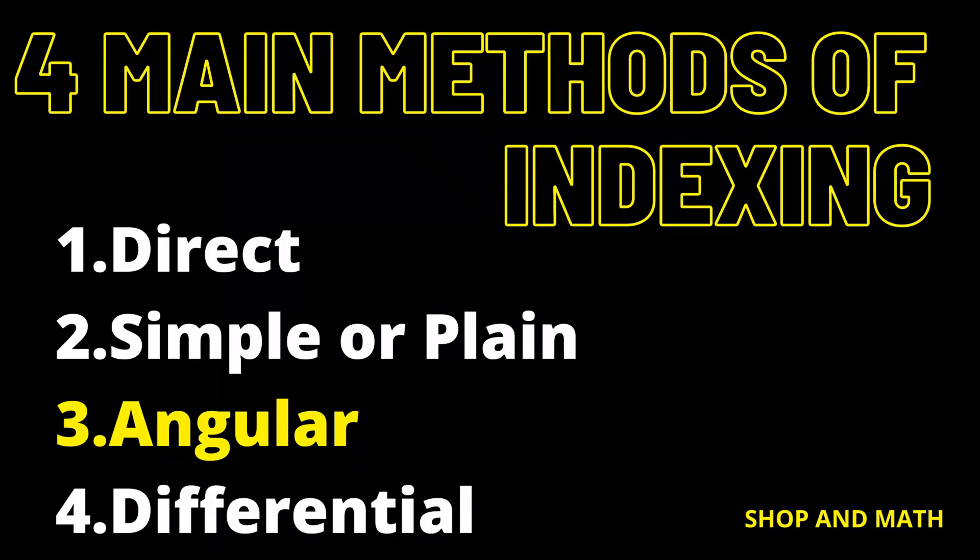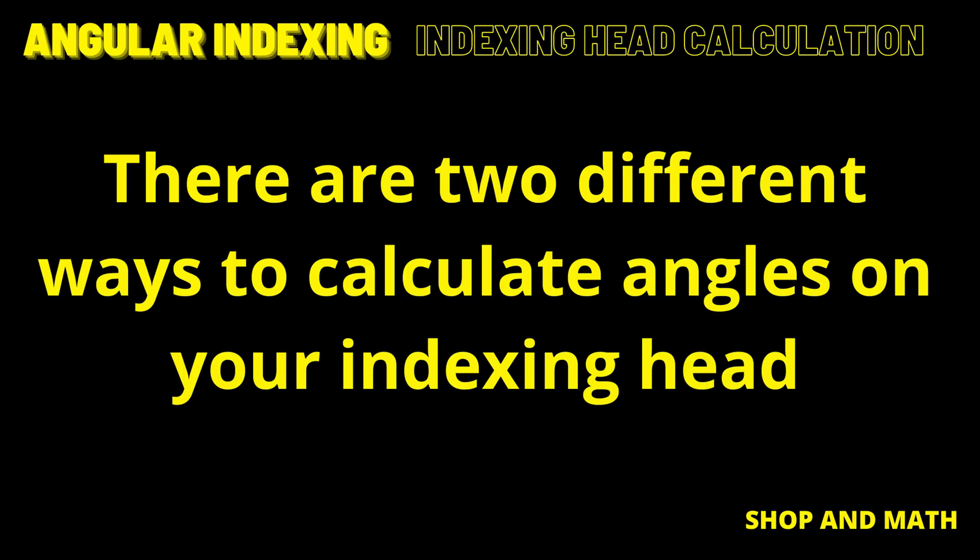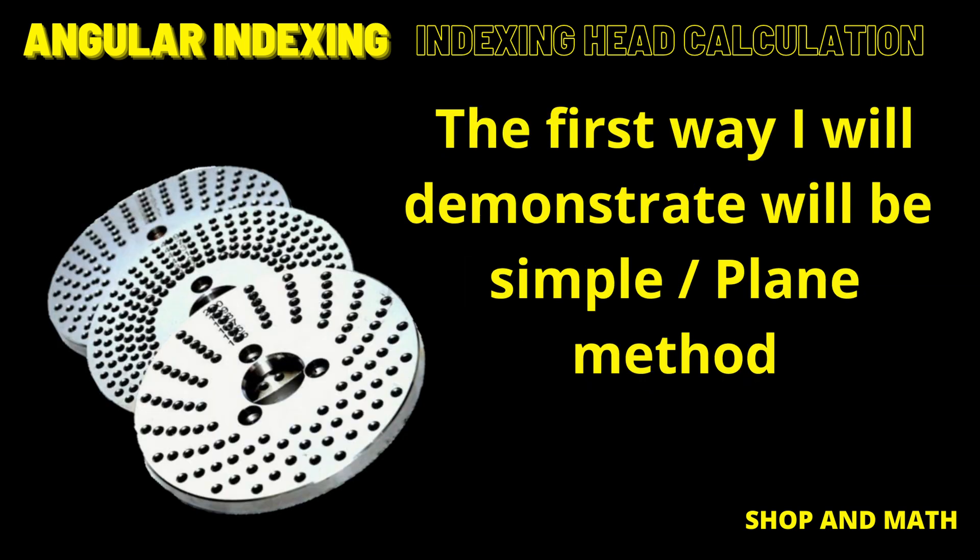Throughout this video series I am going to be covering the four main methods of indexing, but in this video I'm only covering angular indexing. Let's talk about the two main ways of calculating angles on an indexing head. The first way is basically the same as if you were finding divisions, but instead we're going to find angles.